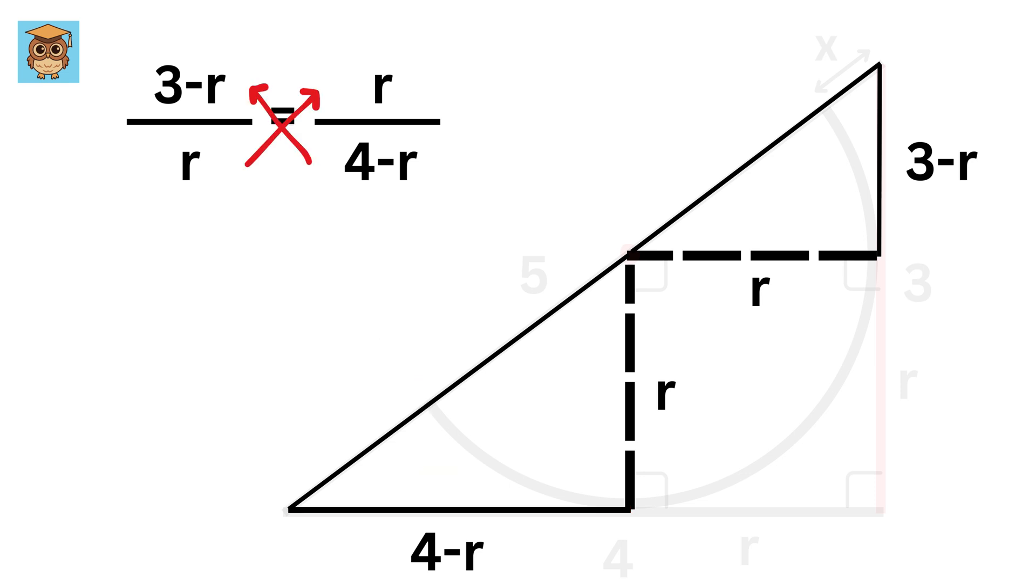On cross-multiplying, we get R times R equal 3 minus R times 4 minus R. This gives R square equals 12 plus R square minus 7R. R square will get cancelled from both sides, and we get 7R equals 12, or R equals 12 over 7. Great.